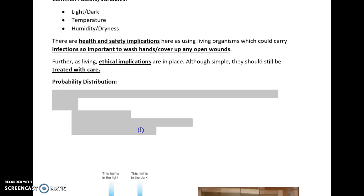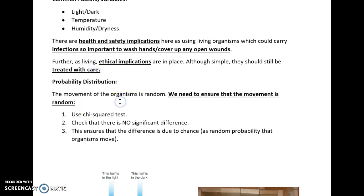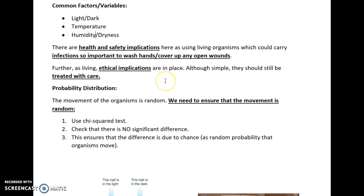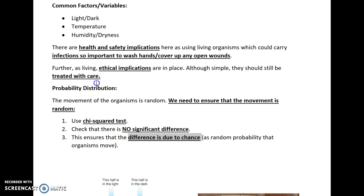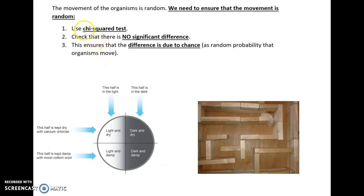An important thing we need to do before these practicals is to assess the probability distribution. We need to ensure that the movement of organisms is random before you put them in the choice chamber, because if their movement is already being influenced by something, there'd be no point assessing your variables. To ensure random movement, we do the chi-squared test and check that there is no significant difference at whatever probability level we're assessing at — confirming that movement is due to chance.